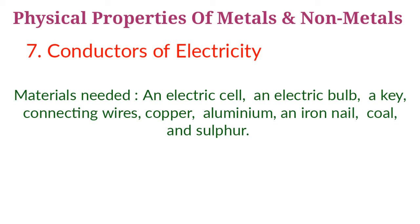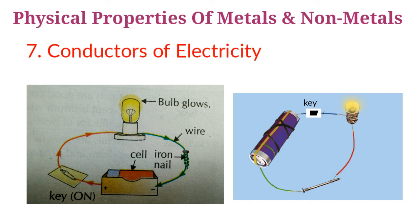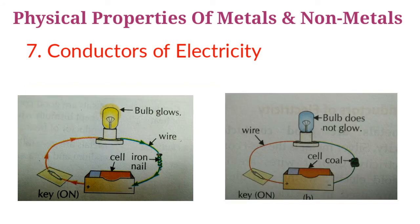For this activity, we need an electric cell, an electric bulb, a key, and connecting wires to test whether electricity can pass through an object or not. Connect an iron nail in the circuit as shown in the figure, then repeat the activity with copper, aluminium, coal, and sulfur. You observe that the electric bulb glows when an iron nail, aluminium, or copper is connected in the circuit. The bulb does not glow when coal or sulfur is connected. You can conclude that metals like iron, copper, and aluminium are good conductors of electricity, whereas non-metals like coal and sulfur are poor conductors of electricity.